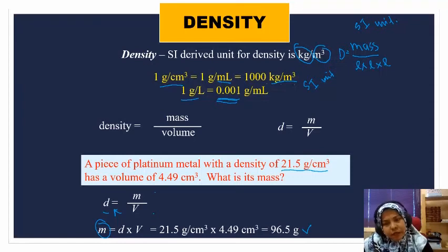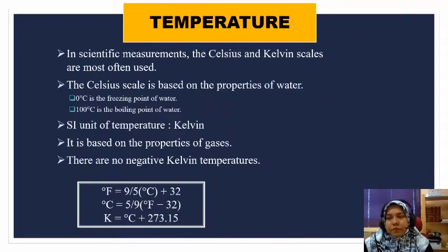You get the answer 96.5 gram. This is the basic one because first, it's straightforward - they gave you density, they gave you volume. And second, it's not complicated because the unit is the same - centimeter cubic, centimeter cubic. There are some problems that will require you to change the unit first before you can put it into the equation.